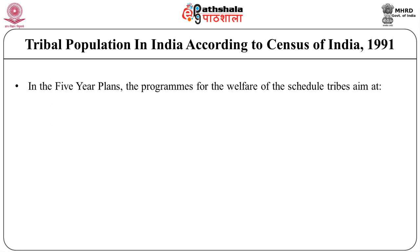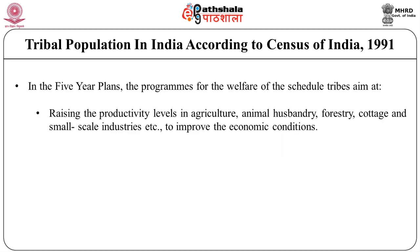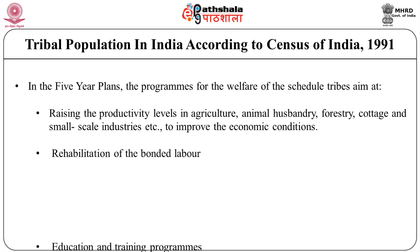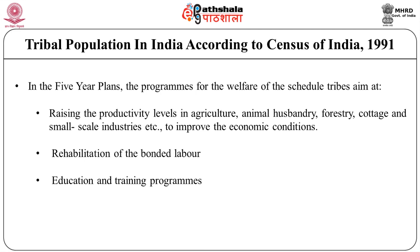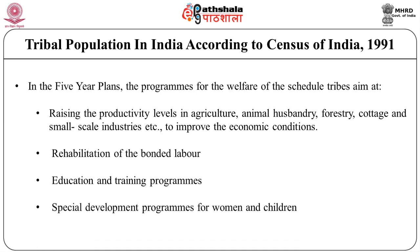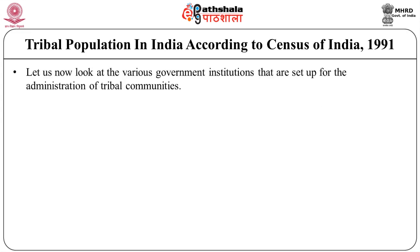In the Five-Year Plans, the program for the welfare of the scheduled tribe aims at: first, raising the productivity level in agriculture, animal husbandry, forestry, cottage and small-scale industries to improve economic conditions; second, rehabilitation of bonded labor; third, education and training programs; and fourth, special development programs for women and children. Let's now look at the various government institutions set up for the administration of the tribal communities.